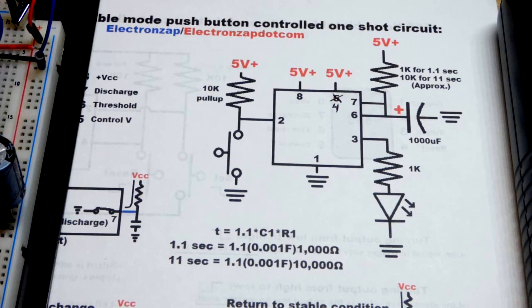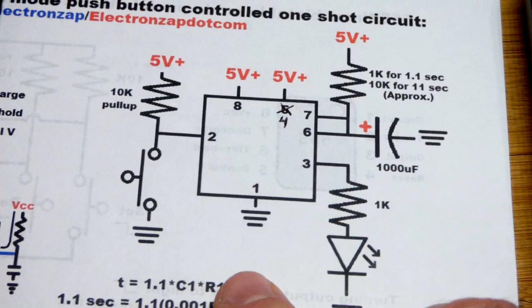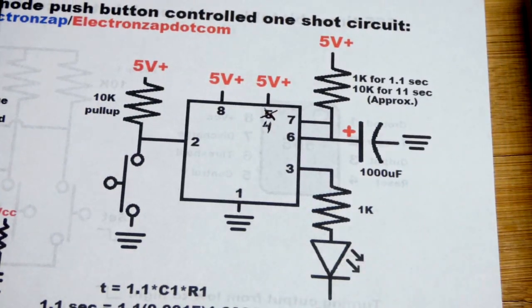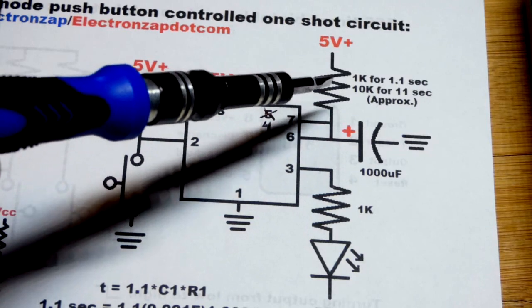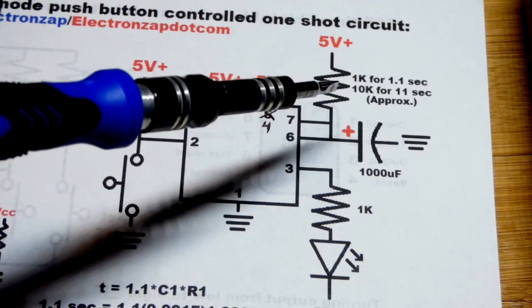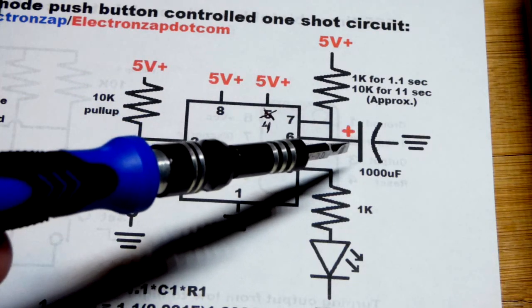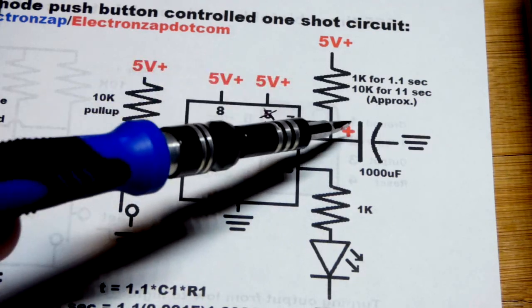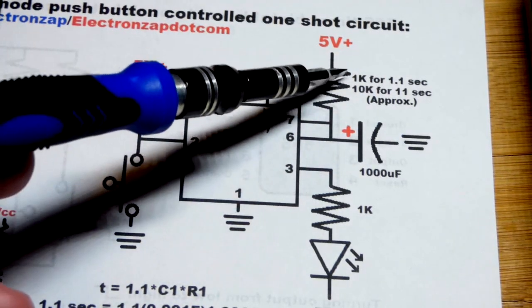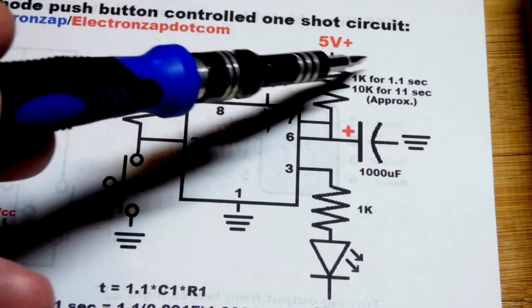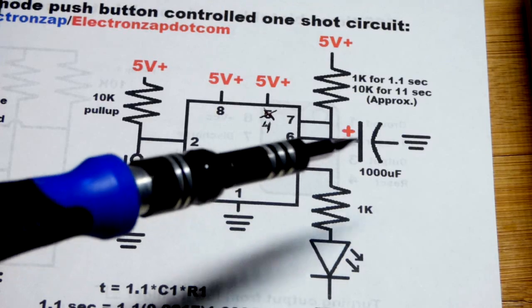But in any case, we set the time with a capacitor. So we're going to use a 1,000 microfarad capacitor. Helps make the math easy. We'll basically get a time constant based on the resistor that we use. And so one time constant is about how long it takes for a capacitor to charge to two-thirds. So it's going to take a little bit longer when we do the math. But in any case, one kilo-ohm resistor, it should charge to about two-thirds in about one second. 10 kilo-ohm in about 11 seconds.